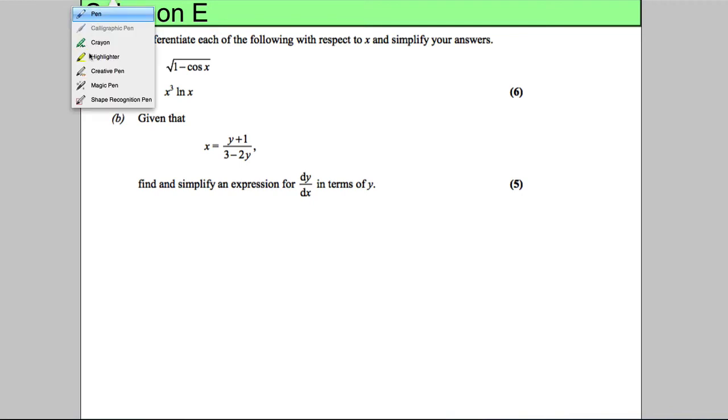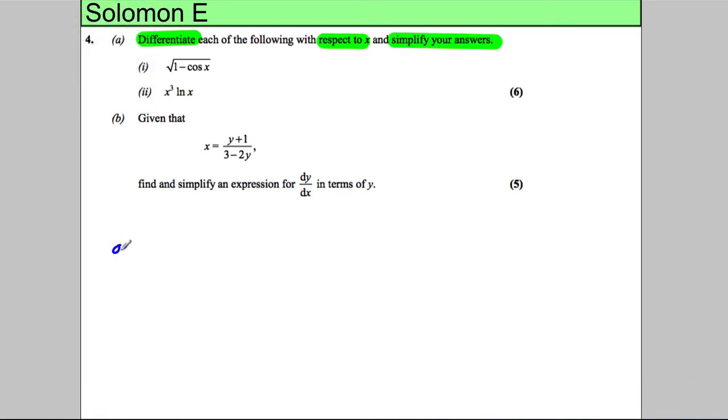The question says to differentiate each of the following with respect to X and simplify your answers. For part A, we have the function y equals the square root of 1 minus cos X, which I'm going to write as 1 minus cos X to the power of one-half.